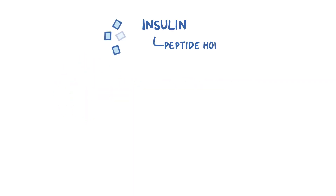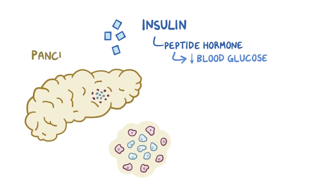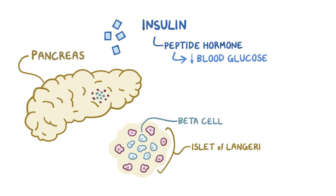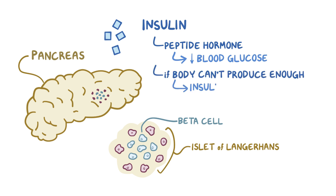Insulin is a type of peptide hormone that reduces the amount of glucose in the blood. It is produced in the pancreas by beta cells. These cells are found within clusters of endocrine cells called the islets of Langerhans, which are distributed across the pancreas. If the body is unable to produce enough insulin, then insulin therapy is used to keep the blood glucose low.